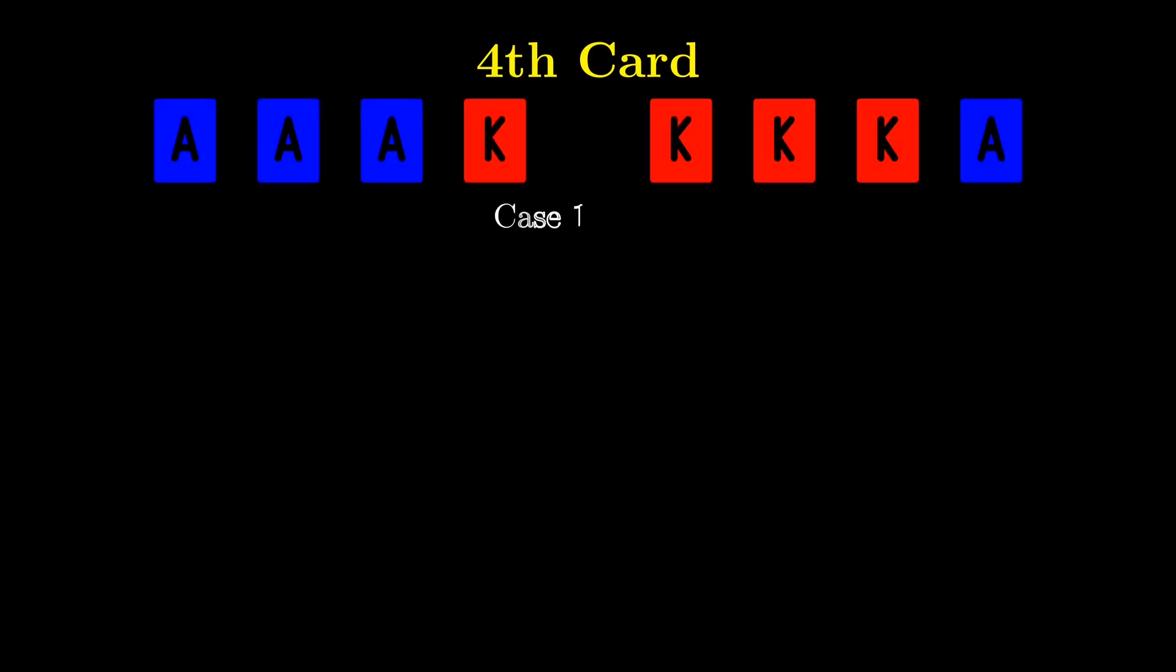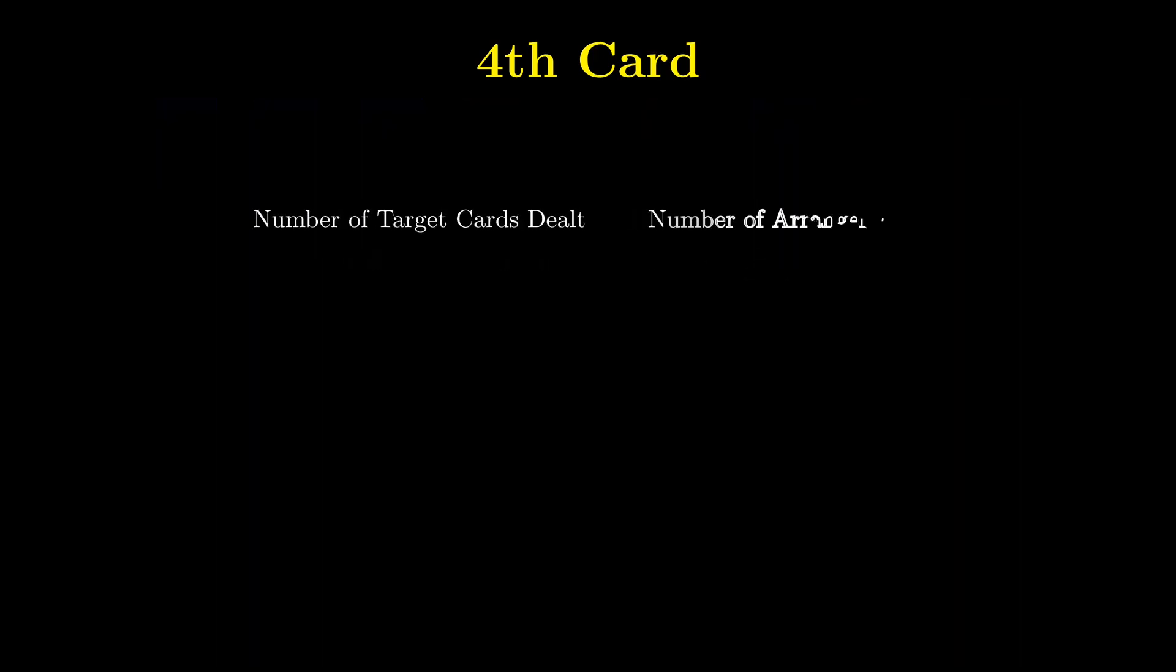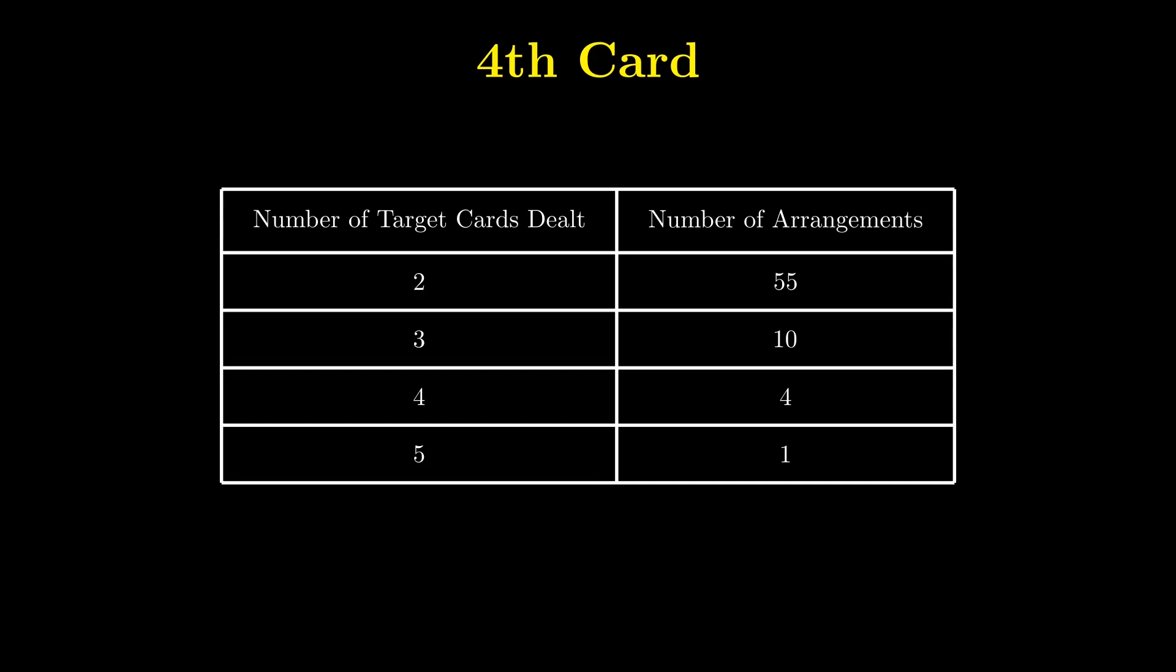Finally, let's consider the fourth card. If we have a king, we can stop dealing, and there are 4 arrangements. Otherwise, we have 4 aces in a row, and we have 1 arrangement in this case.